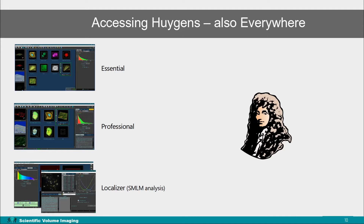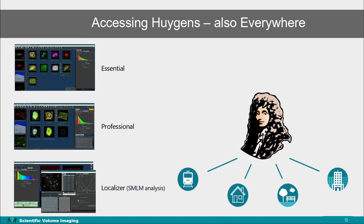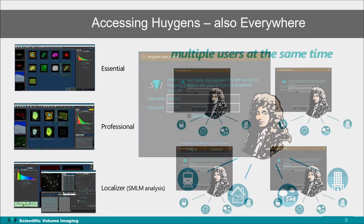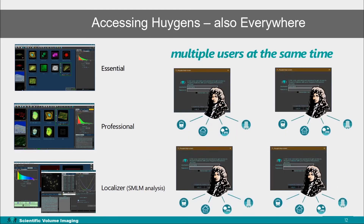Huygens can now also be used everywhere. When you are at home, in the office or on the train, simply start Huygens and log in with your account. Multiple users can use Huygens simultaneously and from any place.